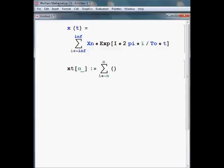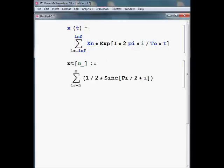In this case, I have my x(n) equal to 1/2 sinc(pi/2 times the index). And then my exponential will be the imaginary part times 2 pi times the sum index divided by the period times t.